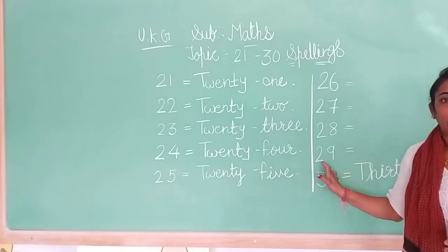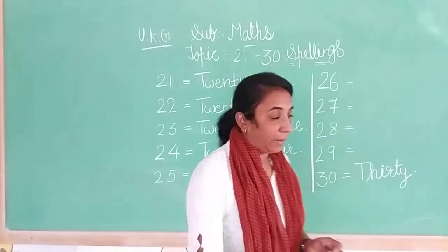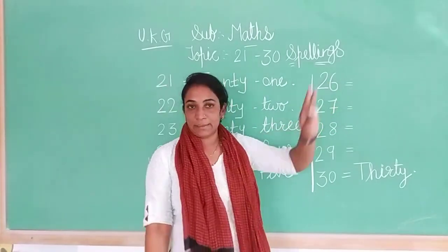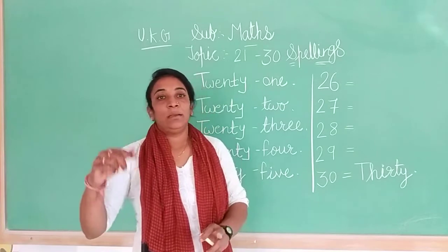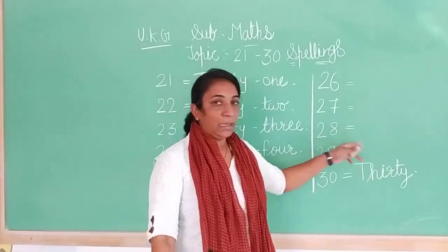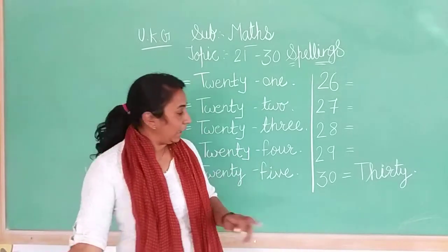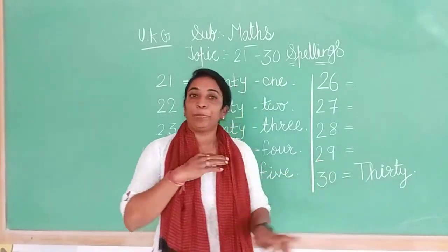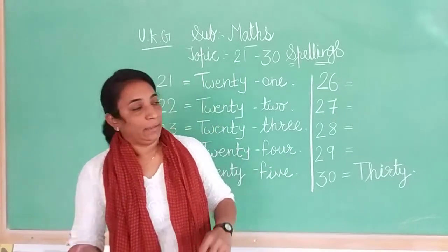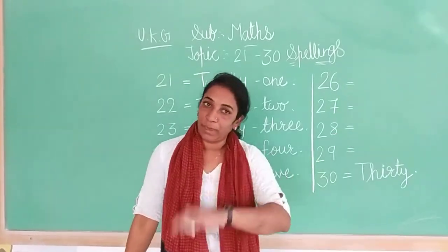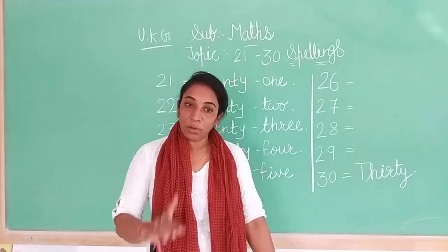26 to 29 — all of you write. First all of you write spelling of 20, then 26 — 6. 27 — 20 then 7. 28 — first write spelling of 20, then write 8. 29 — first all of you write 20, then write spelling of 9. 29. And last, 30.